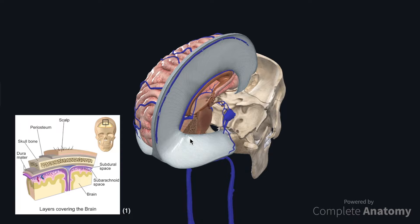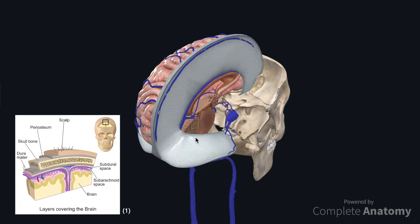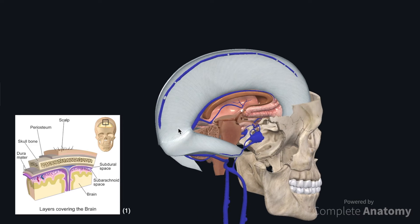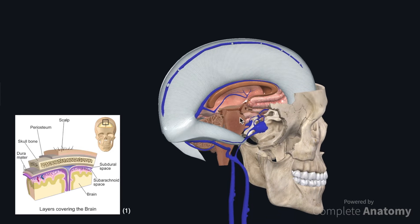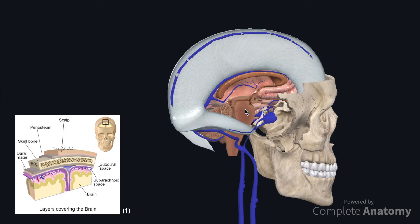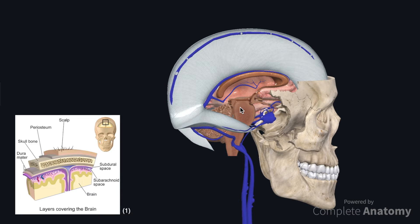The dural venous sinuses are endothelium-lined spaces between the periosteal and meningeal layers of dura. Large veins from the surface of the brain empty into these sinuses and most of the blood from the brain will drain through them into the internal jugular vein.